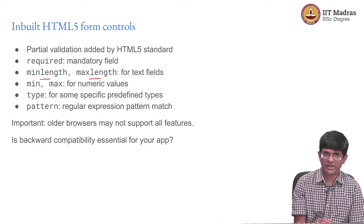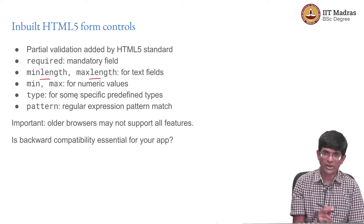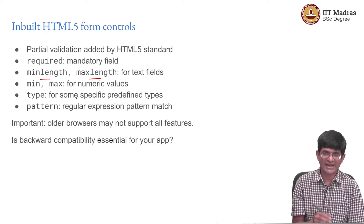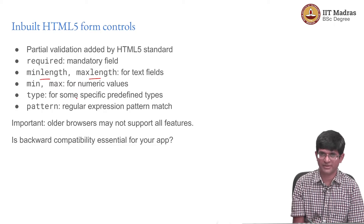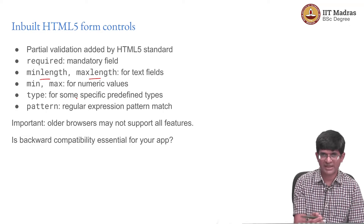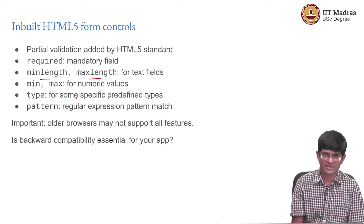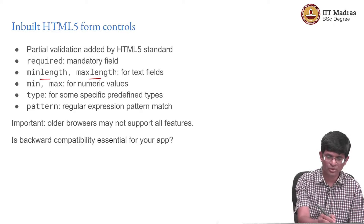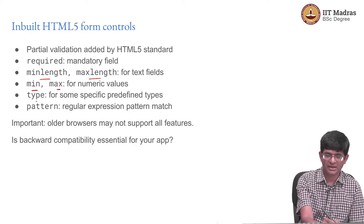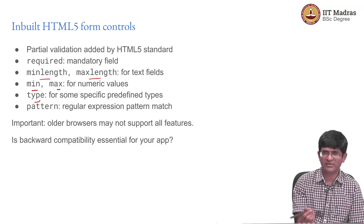Remember, even if you specify a max length in the client, you have to check it again at the server end, because there is no guarantee that the request the server finally received came through a particular client or from a particular page. But this does help to cut down on false alarms. You can do min length and max length for text fields, and min/max for numerics, as well as certain specific predefined types.